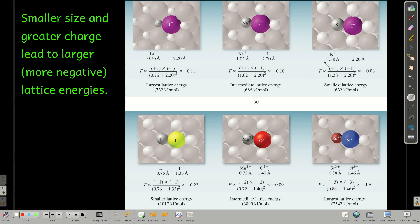And so if we look at these numbers, the force gets smaller as the size, the distance between them gets bigger. Because this 2.20 is the radius of the iodide atom. The 0.76 is the radius of the lithium, 1.02 sodium, and so forth. So as the denominator gets bigger, the value gets smaller. The smaller the force of attraction, the lower the lattice energy.